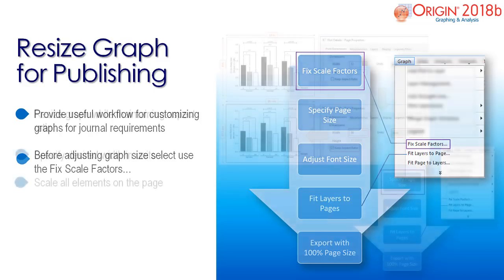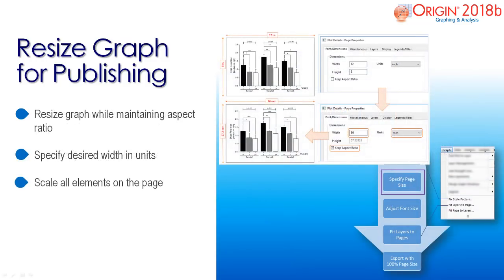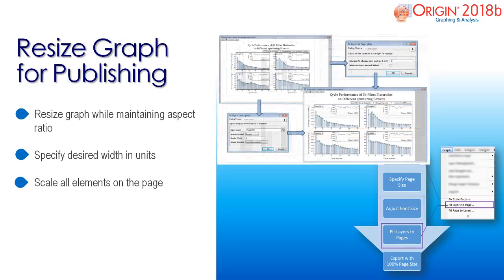Next, specify your page dimensions and select keep aspect ratio in order to auto scale the height when changing the width. If needed, adjust the font size. Once the page dimensions and font size are edited, simply select fit layers to page from the graph menu tab to quickly fit the graph layer to the available space.